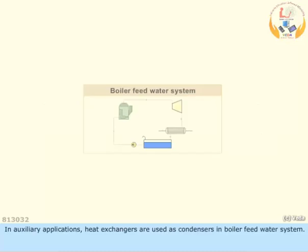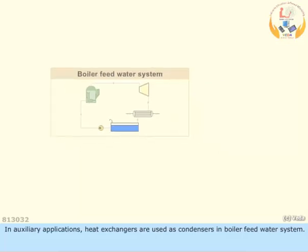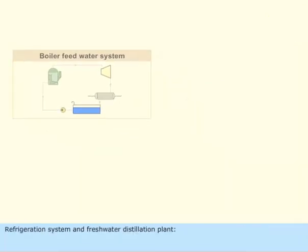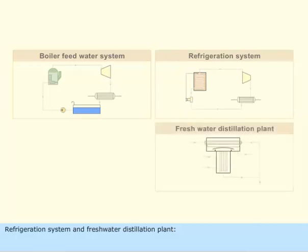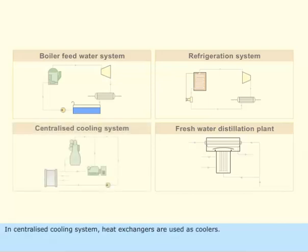In auxiliary applications, heat exchangers are used as condensers in boiler feed water systems, refrigeration systems, and freshwater distillation plants. In centralized cooling systems, heat exchangers are used as coolers.